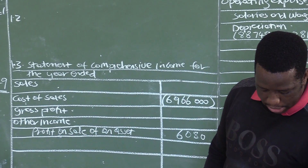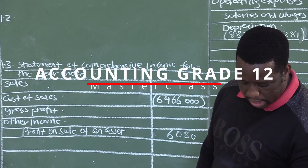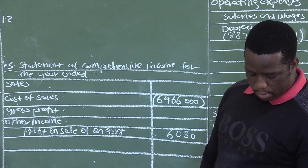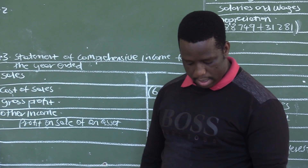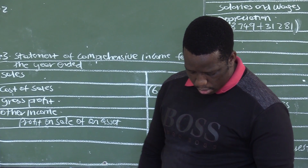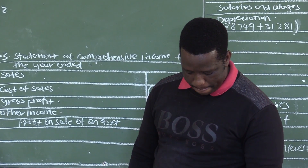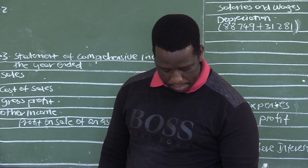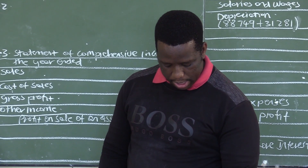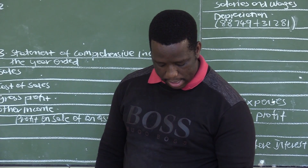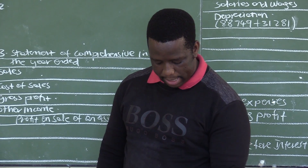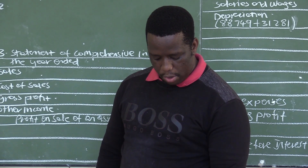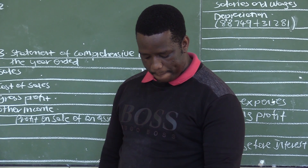Refer to information PE to calculate the trading stock deficit. If you look at information PE on page 5 of your question paper, there is a table provided with the unit cost, unit price, and the total. There is also a statement which tells us that trading stock is valued on the weighted average method.